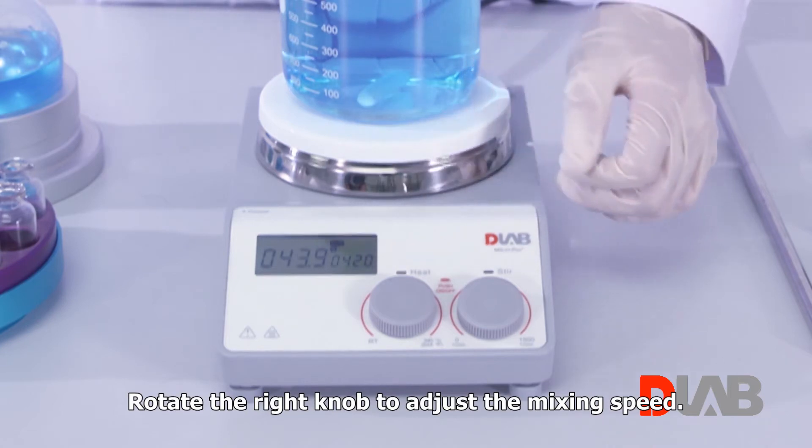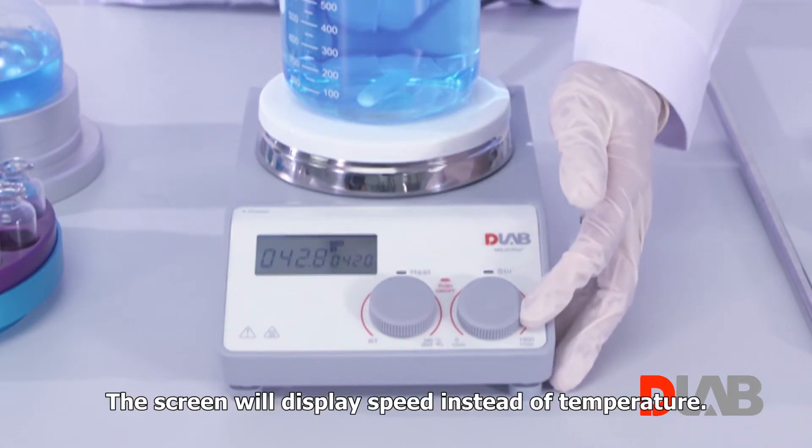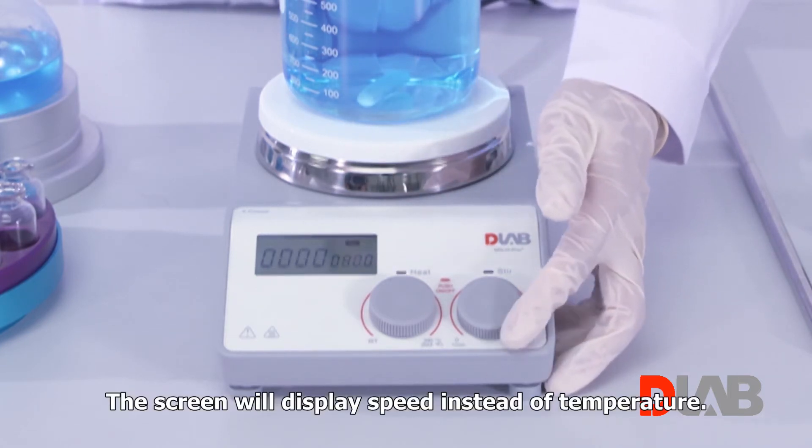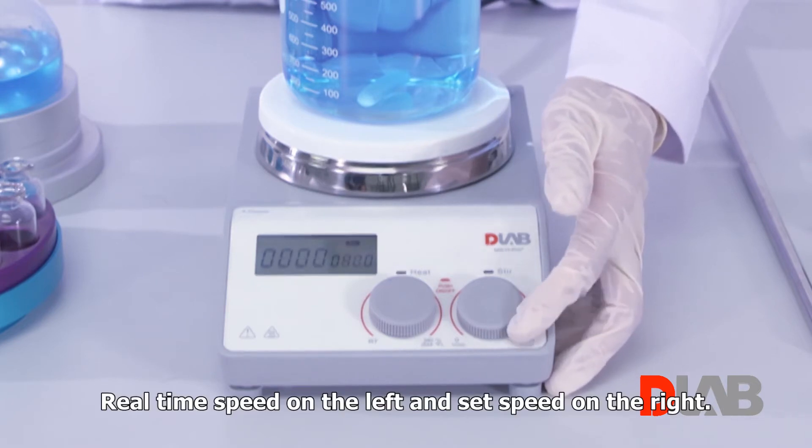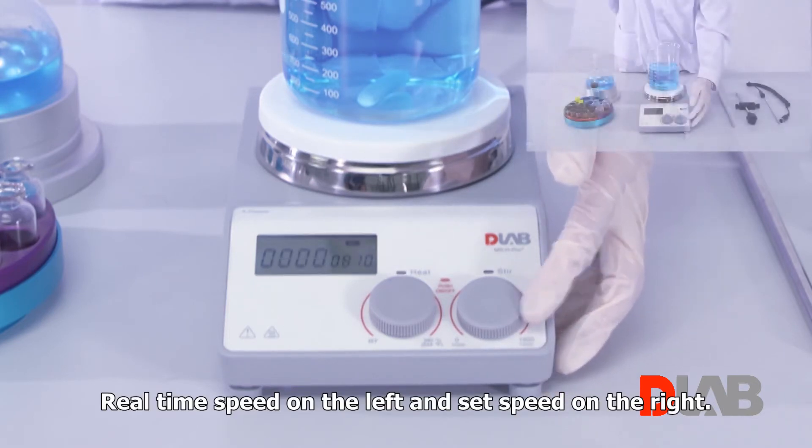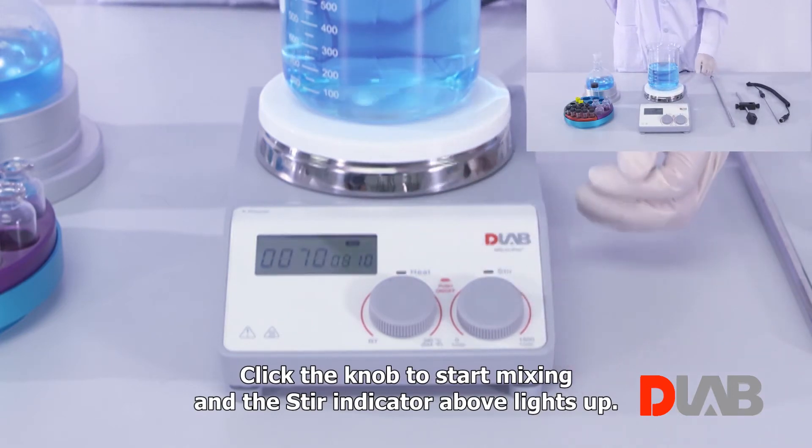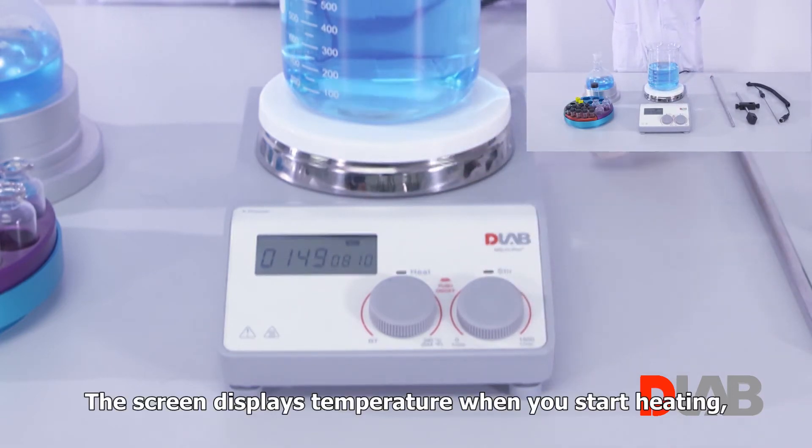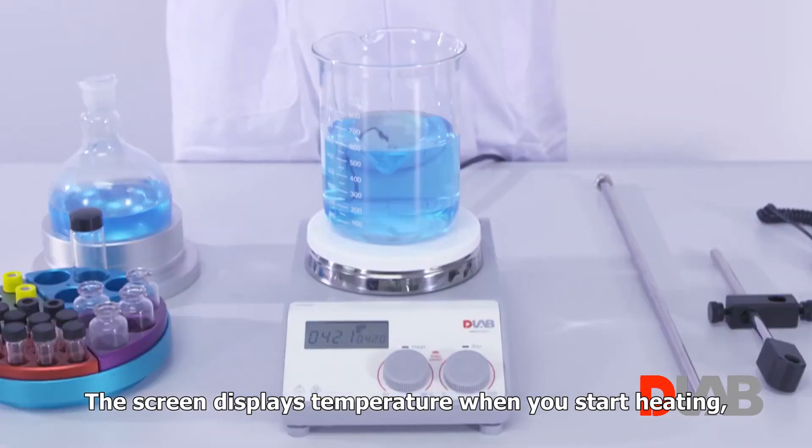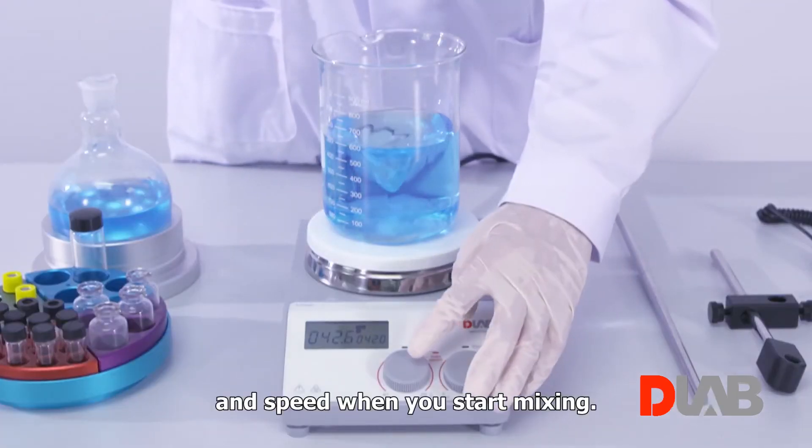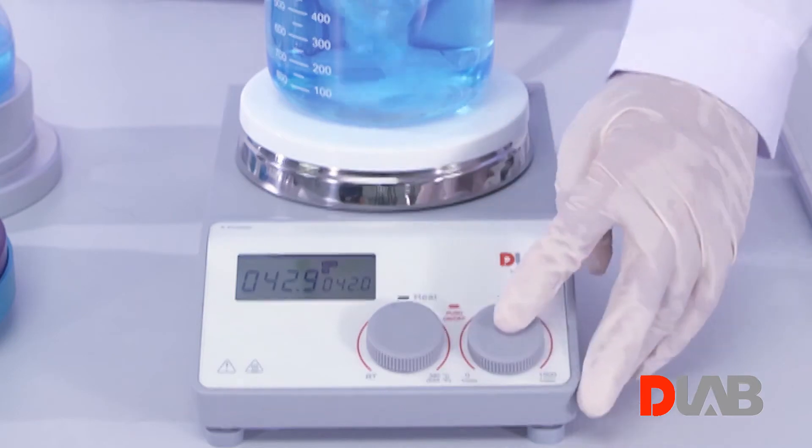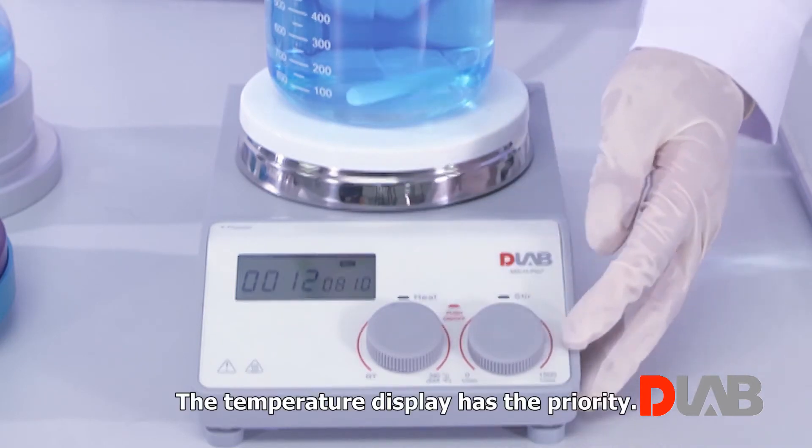Rotate the right knob to adjust the mixing speed. The screen will display speed instead of temperature. Real-time speed on the left and the set speed on the right. Click the knob to start mixing and the stir indicator above lights up. The screen displays temperature when you start heating and speed when you start mixing. The temperature display has the priority.